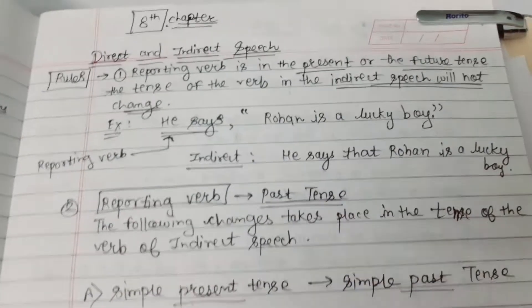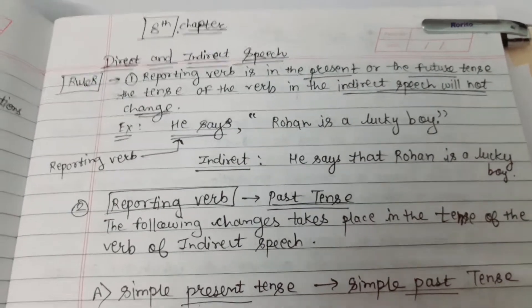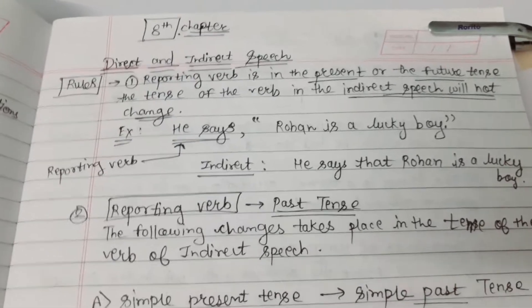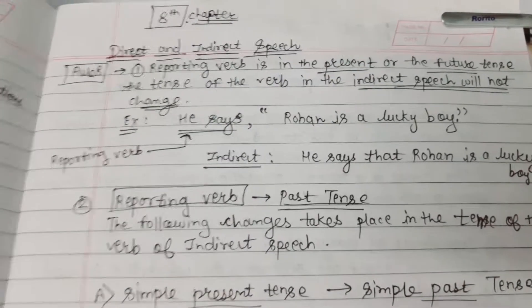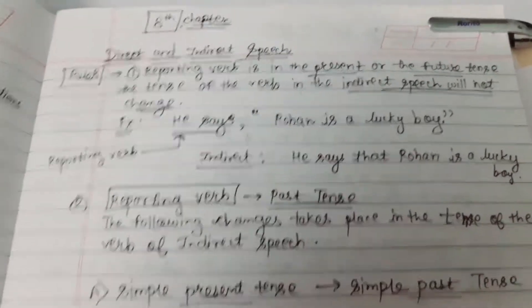Rule 1: When the reporting verb is in the present or the future tense, the tense of the verb in the indirect speech will not change.